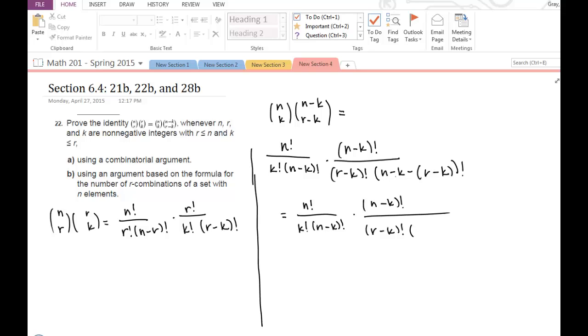So n minus k minus the quantity r minus k is just going to be n minus r. And I'm liking that because that's here, and I'm liking this r minus k because that's here. The only thing that I don't quite like, because I like the k factorial, but this n minus k and this r aren't quite right here. So let's see what we can do.